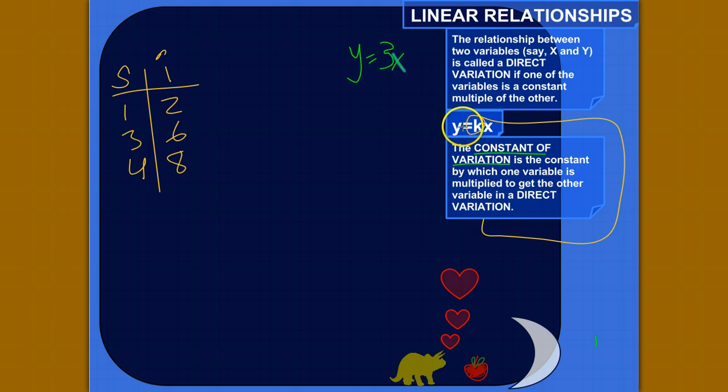And we can write it in this format here, y equals kx, where k just stands for whatever this constant is. Maybe it's y equals 3x, maybe it's y equals 10 billion x.